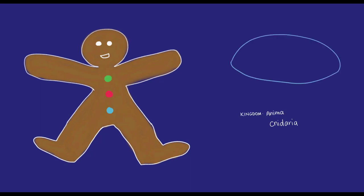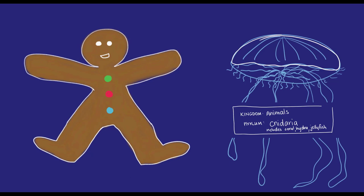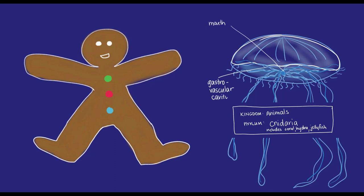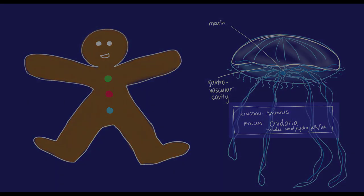Cnidarians, animals including coral, hydra, and jellyfish, have such thin bodies that they only need a gastrovascular cavity, a space inside them that's open to the ocean that allows for the flow of fluids, including digestion and excretion. They have shapes that allow all their cells to be quite close to the cavity in order for diffusion to work.